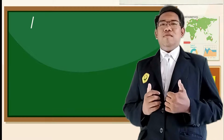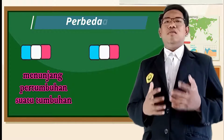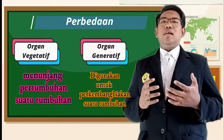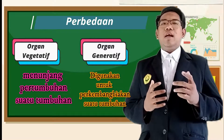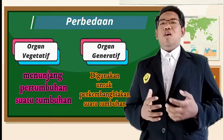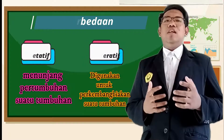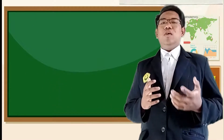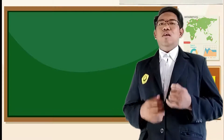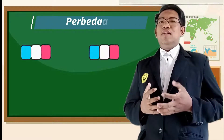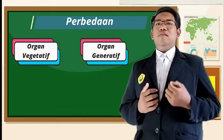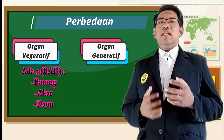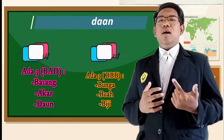Organ pada tumbuhan dibedakan menjadi dua macam. Yang pertama adalah organ vegetatif, dan yang kedua adalah organ generatif. Organ vegetatif adalah organ yang menunjang pertumbuhan suatu tumbuhan. Sedangkan organ generatif, bisa kita ambil dari namanya yaitu generatif — ada kaitannya dengan perkembangbiakan. Organ generatif adalah organ yang digunakan untuk perkembangbiakan suatu tumbuhan.